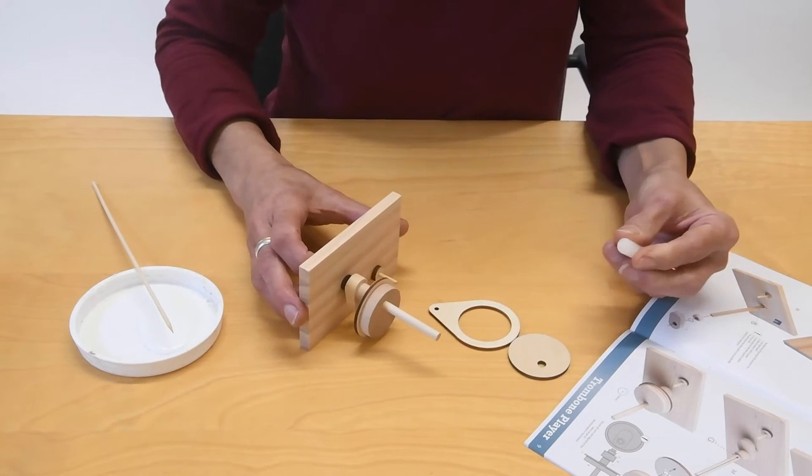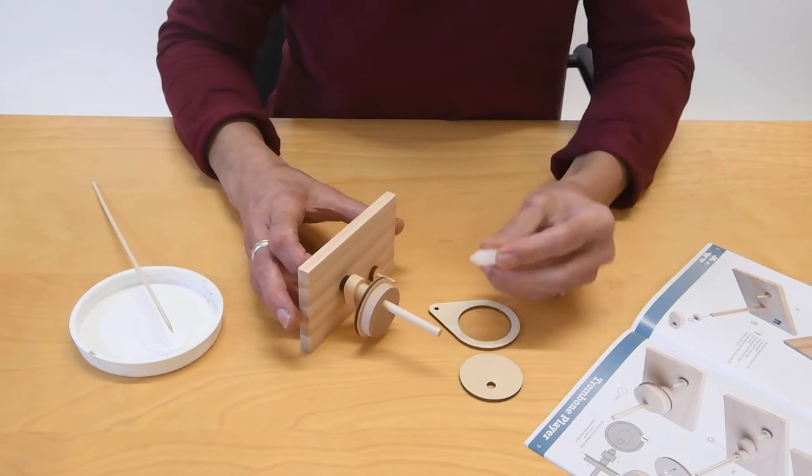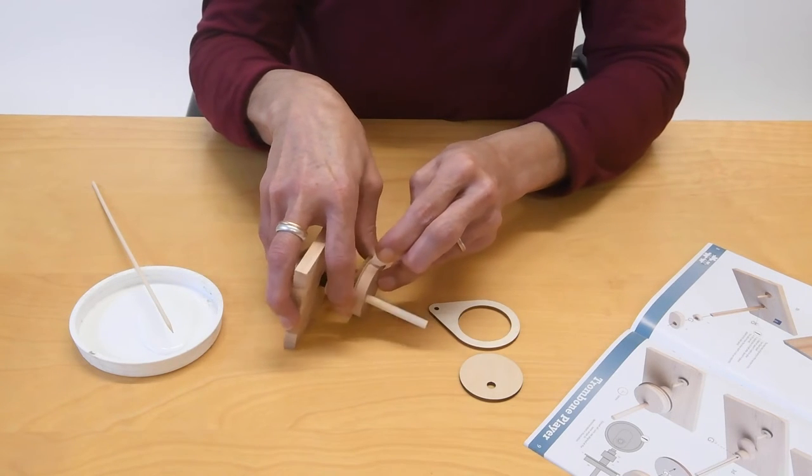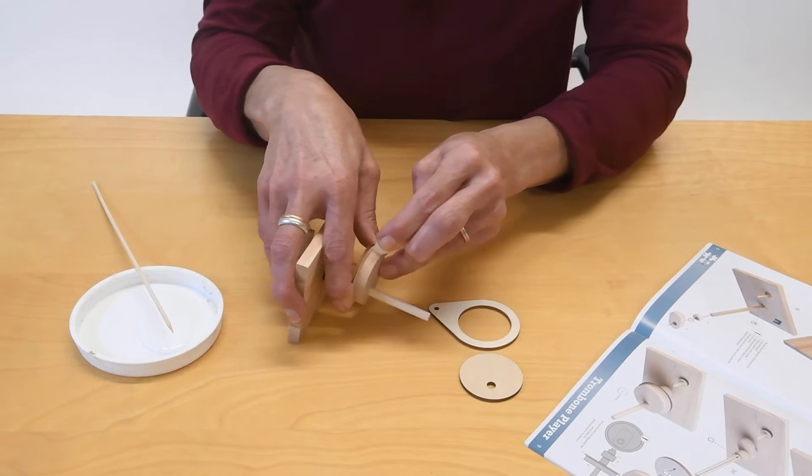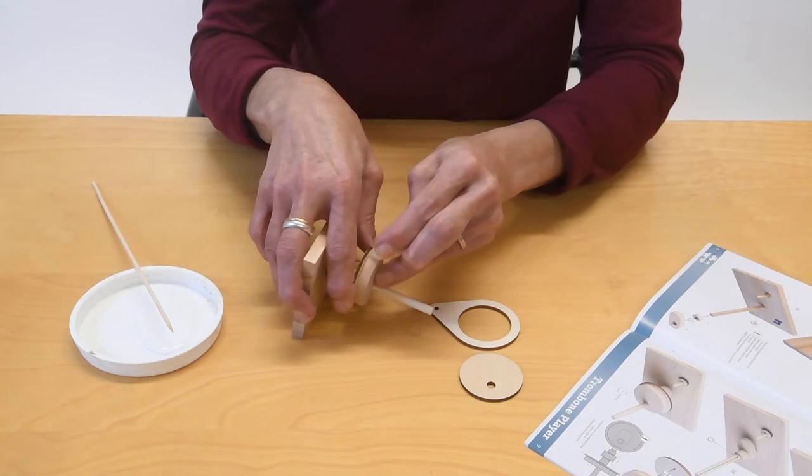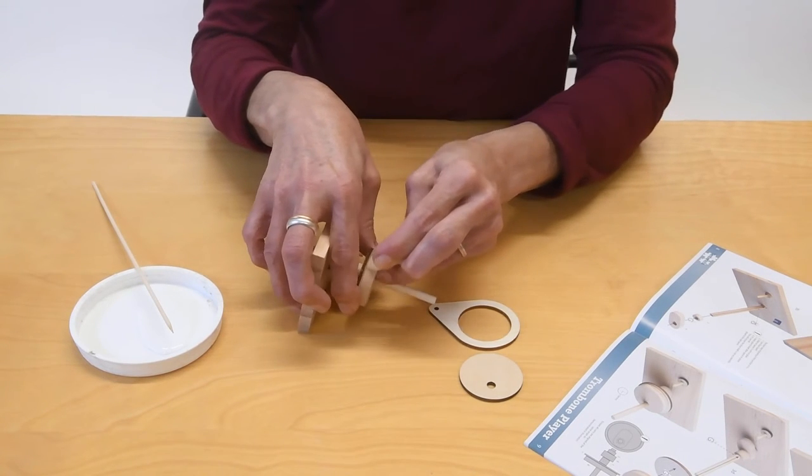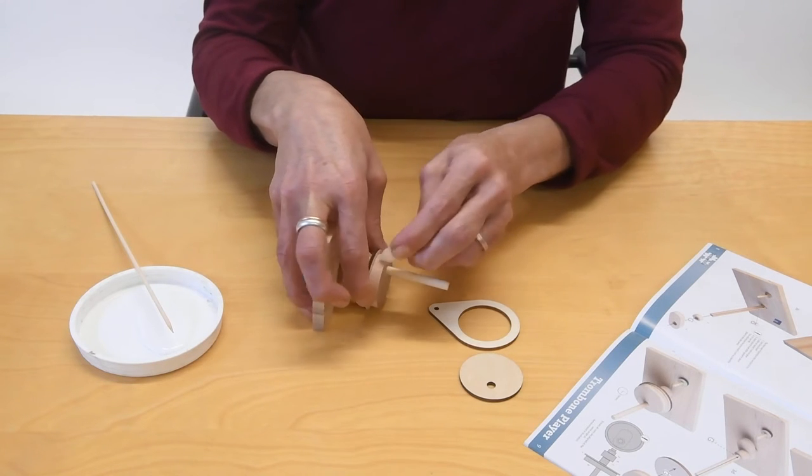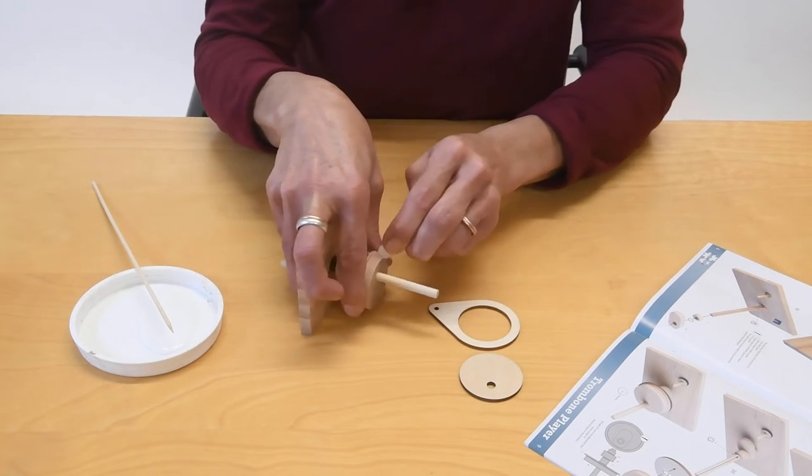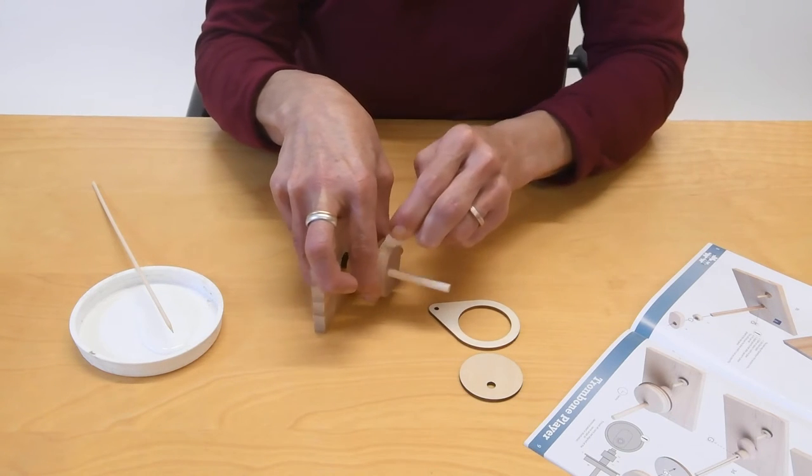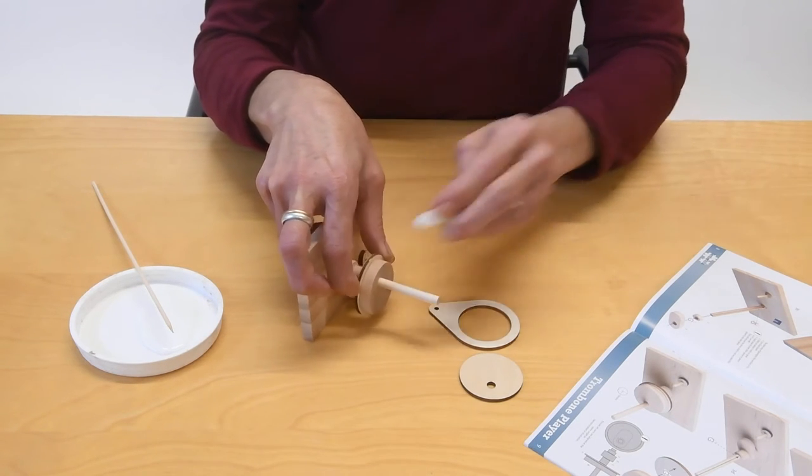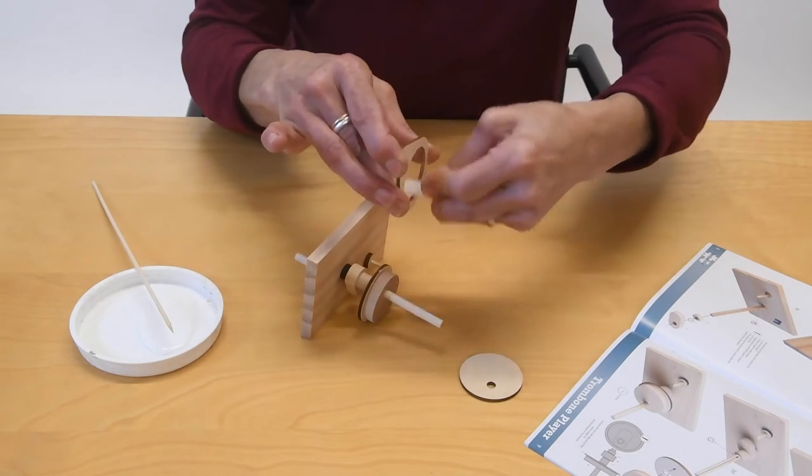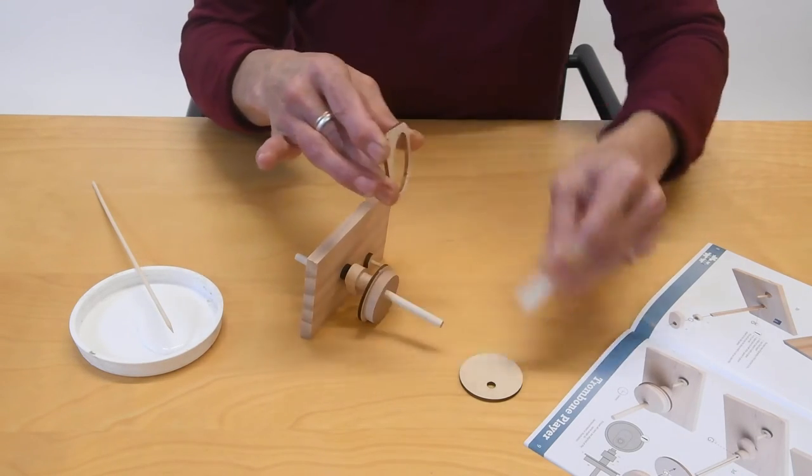Before you go on to put the next pieces on, make sure you put lots and lots of wax on this wheel here. The reason being that once you've got the rest of the components on, you just won't be able to access it. So you can't do this retrospectively. So really put loads on because you want this part to move very, very smoothly. And you can even put a bit on the inside as well, just to be belts and braces about the whole thing.